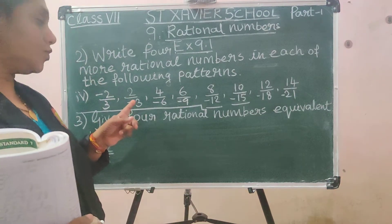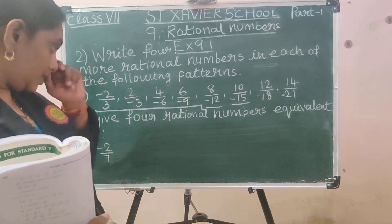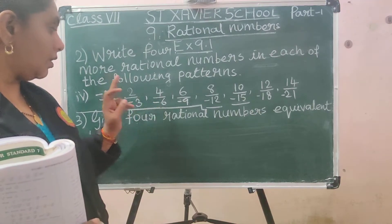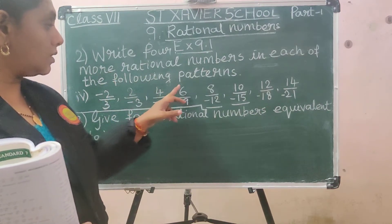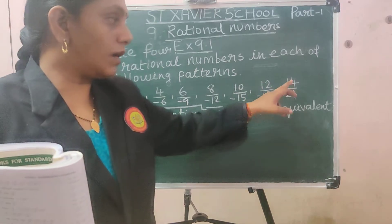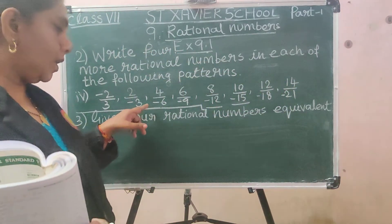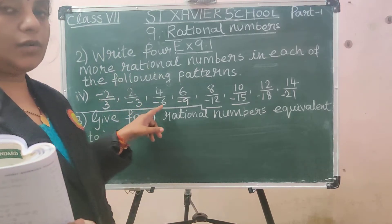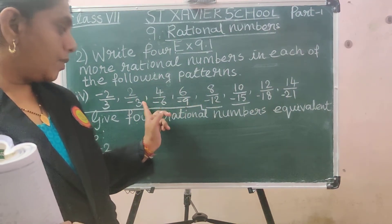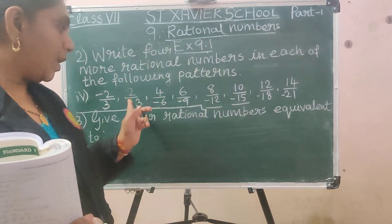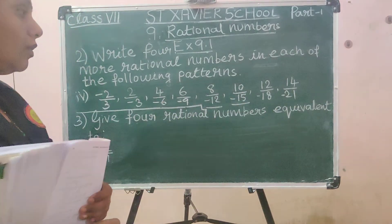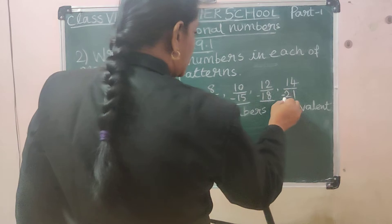Fourth pattern: minus 2 by 3, 2 by minus 3. The numerator is multiplied by 2 each time and denominator is the 3-times table. So: 4 by minus 6, 6 by minus 9, 8 by minus 12, and 10 by minus 15 are the 4 rational numbers. (Denominator: minus 3, minus 6, minus 9, minus 12, minus 15, etc.)